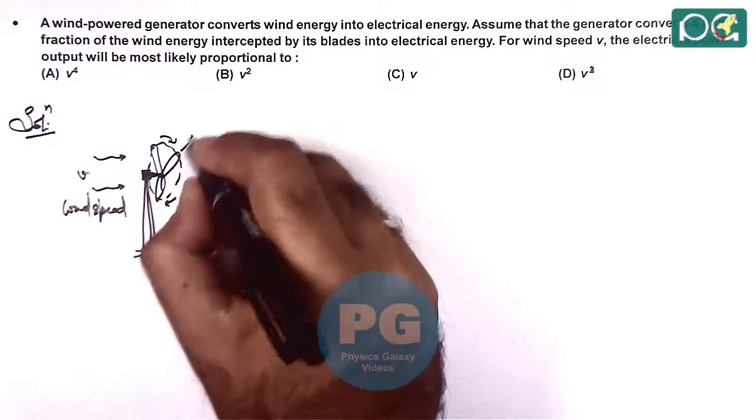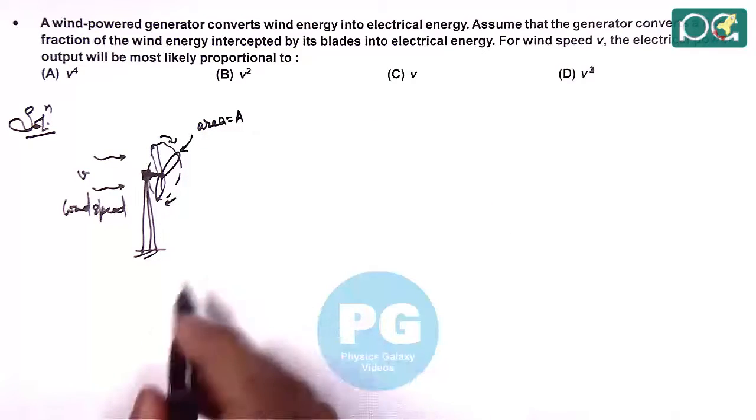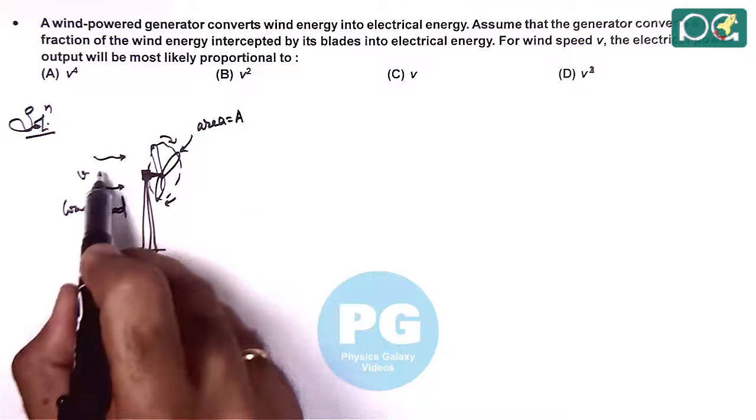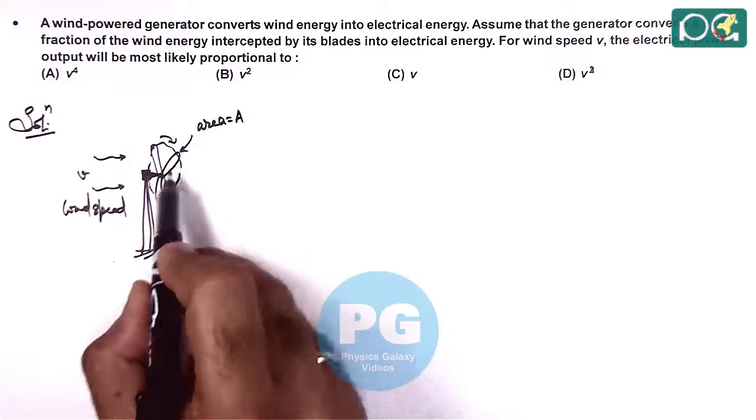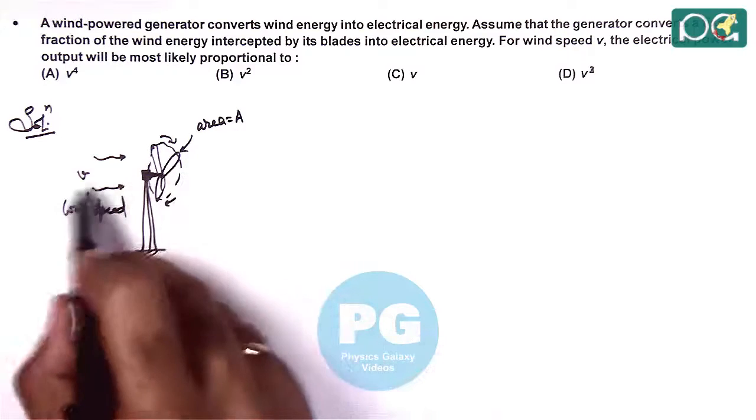If we consider the cross sectional area of these blades is A, then we can directly state the wind which is intercepting the blades per unit time and the volume is VA.